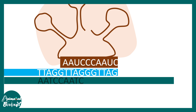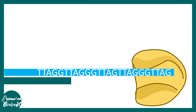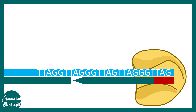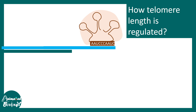Once this extension is done, the telomerase disengages and starts the process again, so repetitive addition happens at the end of the chromosome. After a few cycles there would be an overhang created. Eventually the telomerase disengages and other polymerases engage — such as DNA-pol alpha — and then the other strand is synthesized. This is how the overall telomere shortening problem is solved.